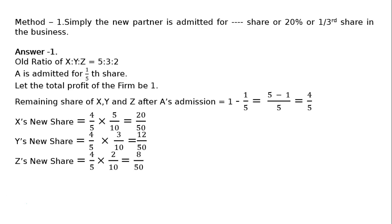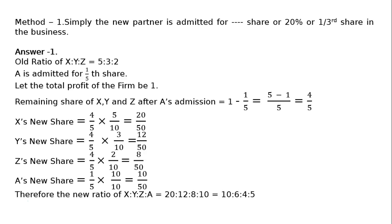Z's new share = 4/5 × 2/10 = 8/50. A's new share = 1/5 × 10/10 = 10/50.